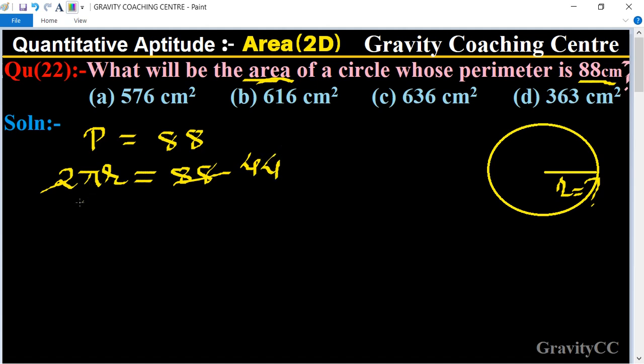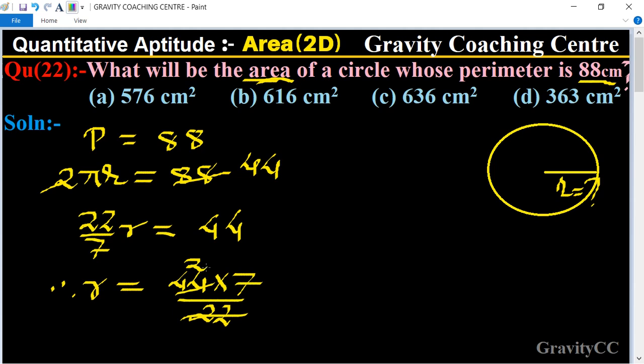And the value of π is 22 upon 7, r equal to 44. Therefore r equal to 44 multiply 7 upon 22, and 22 cancel by 2, so 7 into 14. So 14 is the radius.